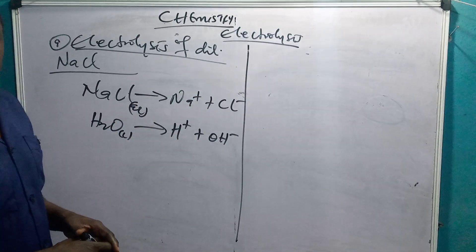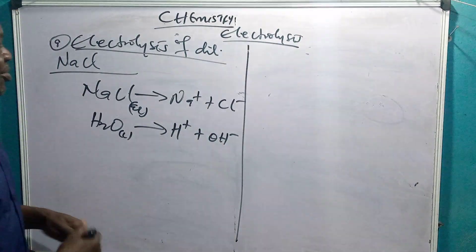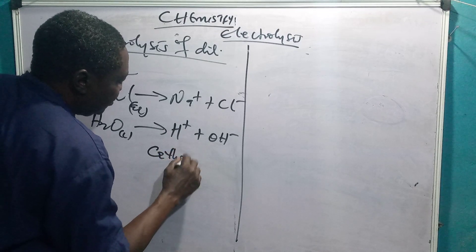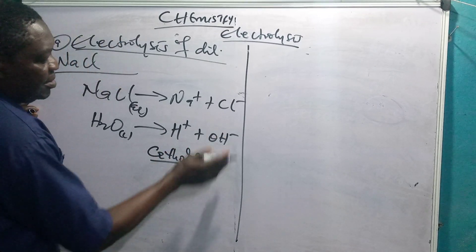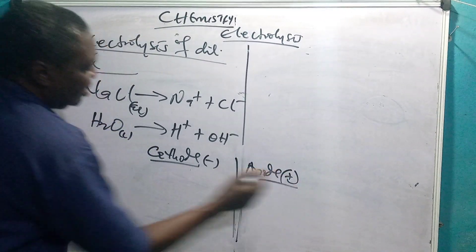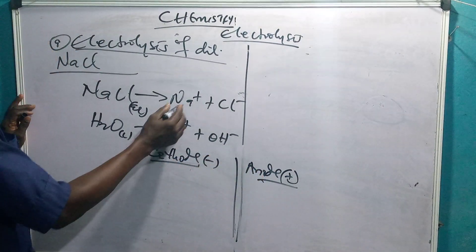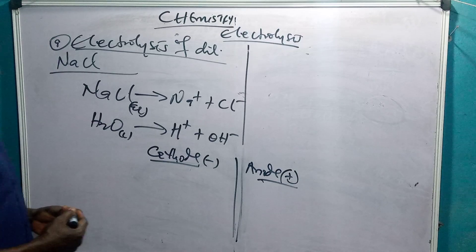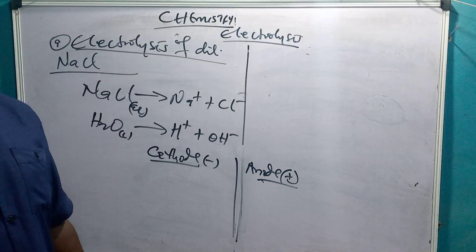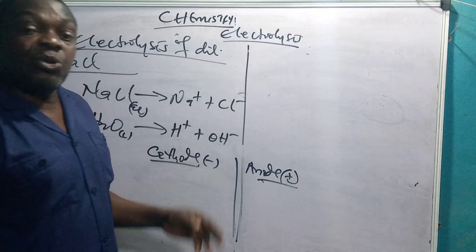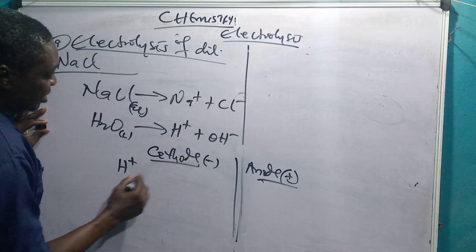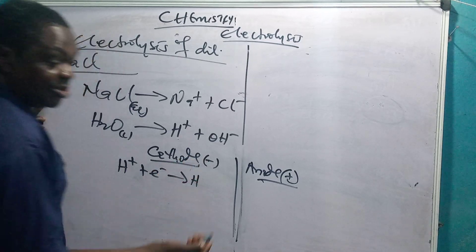Both the sodium ion and the hydrogen ion will migrate to the cathode, while the chloride ion and the hydroxyl ion will migrate to the anode, because the cathode is negatively charged. The anode is positive — it has a deficiency of electrons. Sodium ion is highly electropositive so it prefers to remain in solution, unlike the hydrogen ion which is lower in the electrochemical series and is therefore preferred for discharge.